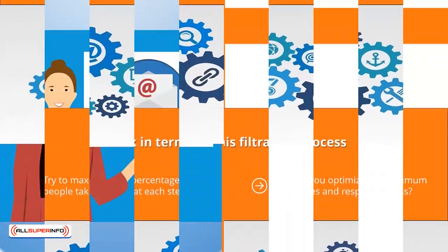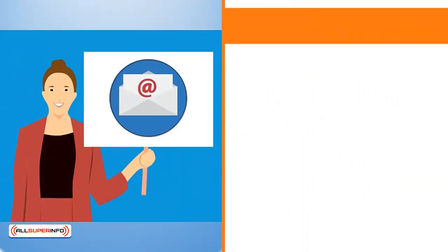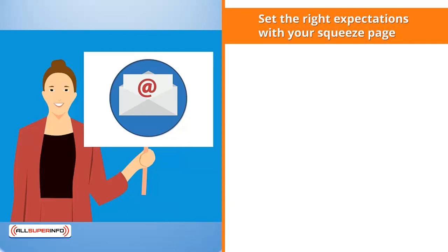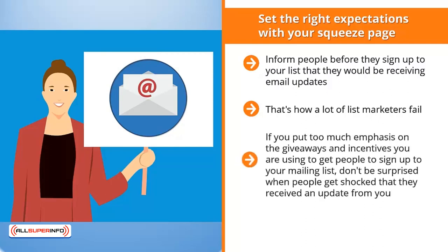How do you optimize for maximum open rates and responsiveness? First, you need to be clear about your target niche. Your updates have to be all about your niche, targeted to the set of problems people in your niche have. Set the right expectations with your squeeze page — inform people before they sign up that they will be receiving email updates, and clue them into the value those updates will bring. Don't just play up the incentive to get people to join your list; that's how a lot of list marketers fail.